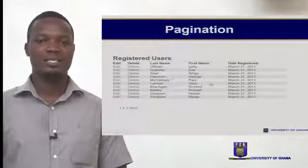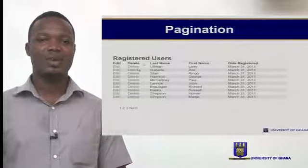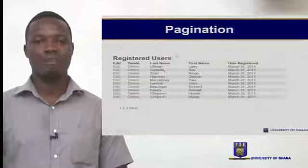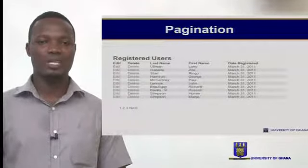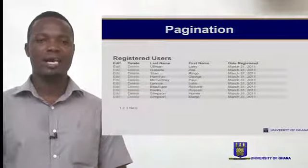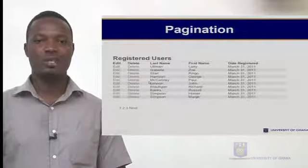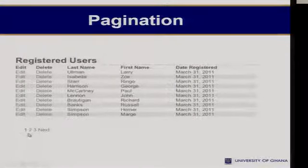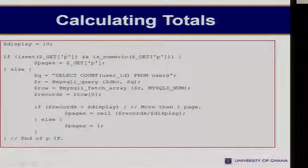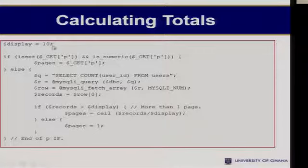In a case where we want to paginate some list or data — say we have a table containing 1,000 rows, but we can't show all 1,000 at a time on the page — we want to do what is called pagination. That means we decide to show 20, 30, 50, or 100 records at a time. When we proceed to the next page, we should be able to tell where we ended on the previous page and continue from there. Here we have a variable called 'display' which holds the value of 10, meaning we plan to display just 10 records per page.